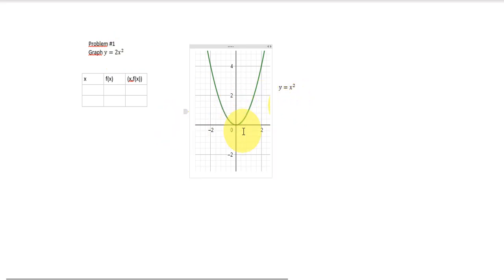We already know the vertex. The vertex is the minimum point, where the graph reaches its lowest. The vertex is at (0, 0). I need to know at least two more points.